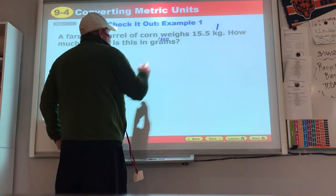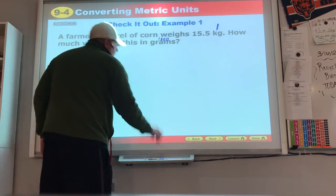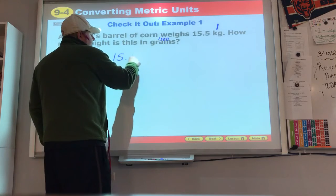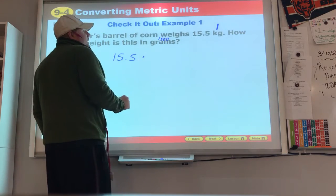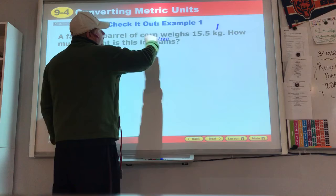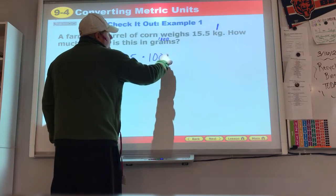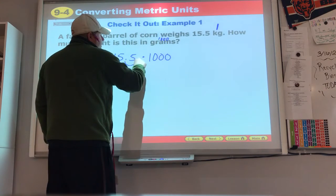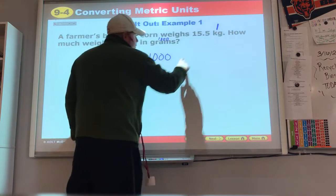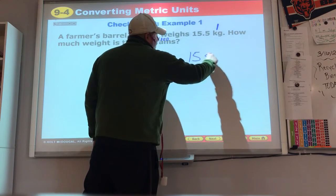So I think, oh, I'm going from big to small. 15.5, big to small means multiply. Multiply by what number? The thousand. One, two, three, fill in those spots of zeros, so fifteen thousand five hundred.